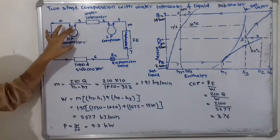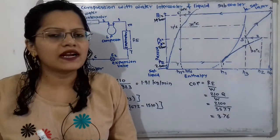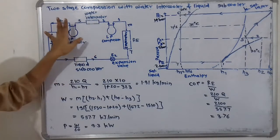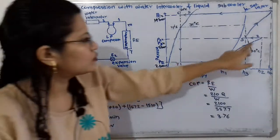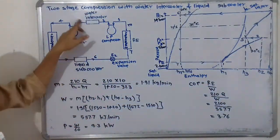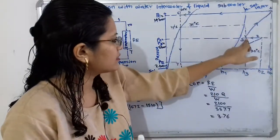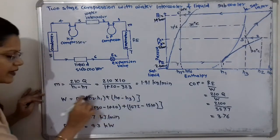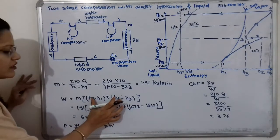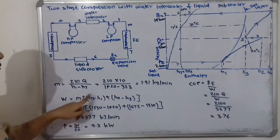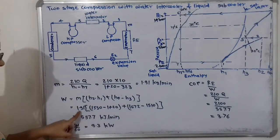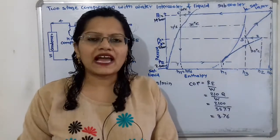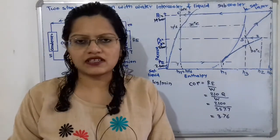Work done is provided at both the low pressure compressor and the high pressure compressor. We multiply the mass flow rate by the sum of enthalpy differences for processes 1 to 2 and 3 to 4: W = m × [(H2 − H1) + (H4 − H3)] = 1.91 × [(1550 − 1420) + (1672 − 1510)] = 557.7 kJ/min.